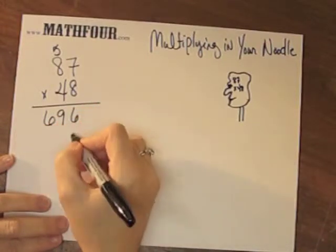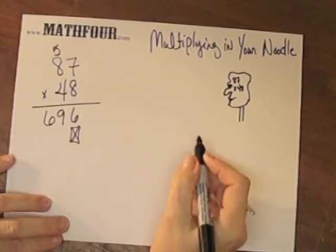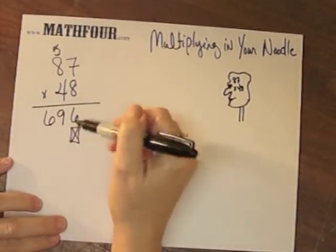And then you put a 0 or an x or skip a space. So I'll just do that, just to denote it. However it is that you like to do.